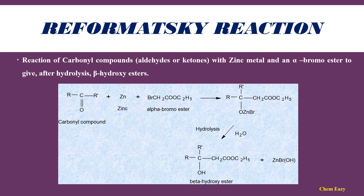In Reformatsky reaction, carbonyl compounds — that is either aldehydes or ketones — reacts with zinc metal and alpha-bromo ester to give beta-hydroxy esters after hydrolysis. You can see the example: carbonyl carbon with zinc and alpha-bromo ester, that is ethyl bromoacetate, gives one intermediate product. This after hydrolysis gives beta-hydroxy ester.